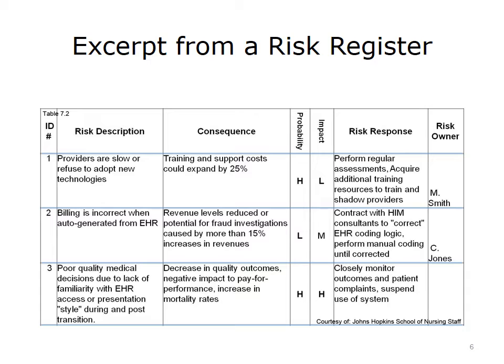You may not be able to complete all of the columns at first. For example, you may have several possible responses to a specific risk, so you might list these in that column for a time. As you continue to analyze the risk, some options will be eliminated and you will eventually zero in on the best strategy. The risk register becomes a place to keep track of and update information as it becomes available. Probability and impact are assessed as high, medium, or low, and you will use these rankings later in your analyses.